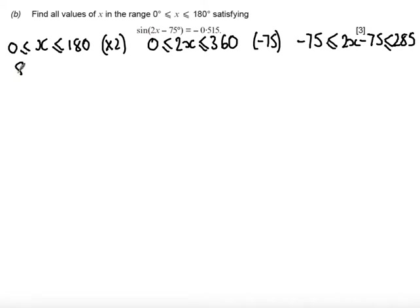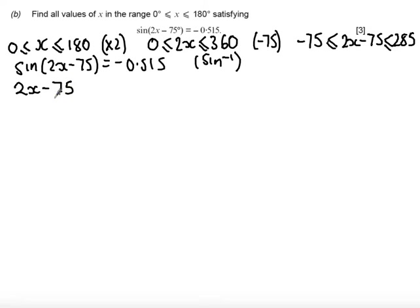Solving this equation, sin(2x - 75) = -0.515. If I take the inverse sine function of both sides, I get 2x - 75. Taking inverse sine of -0.515, you should get an answer of -31.0 degrees.